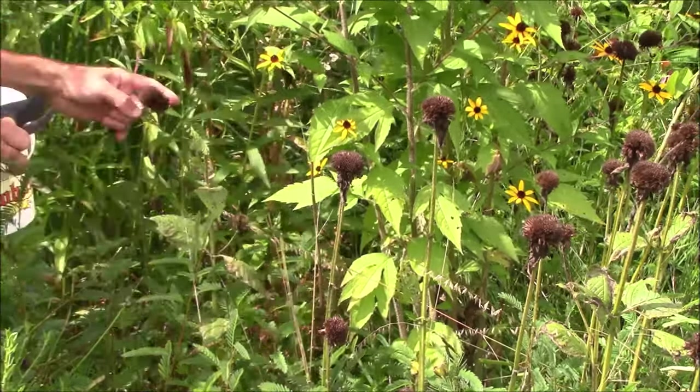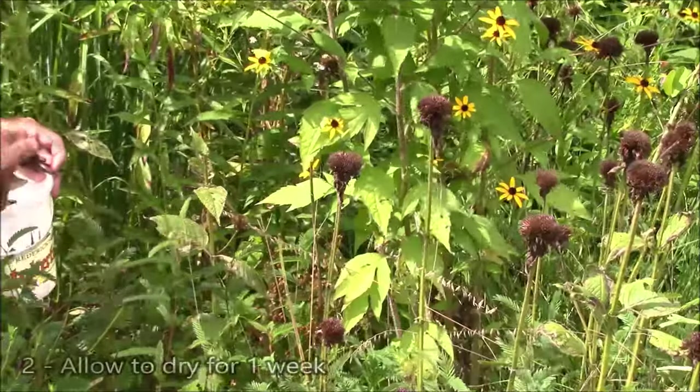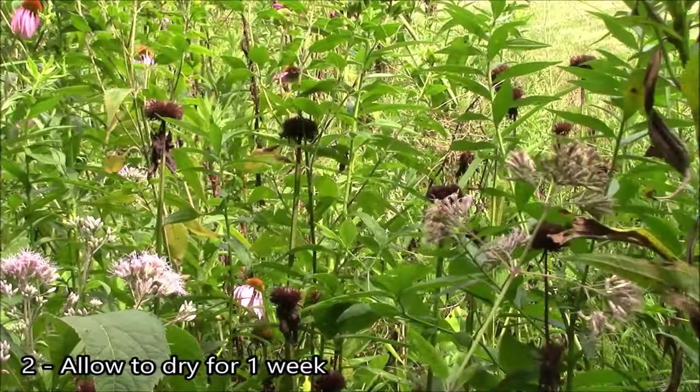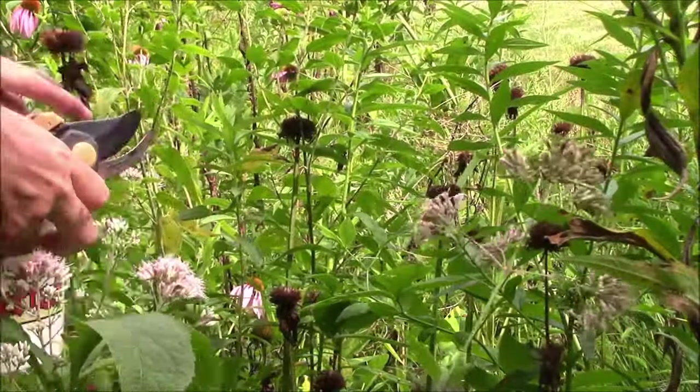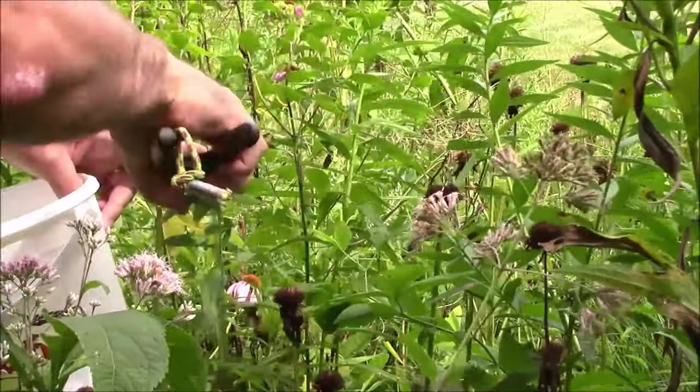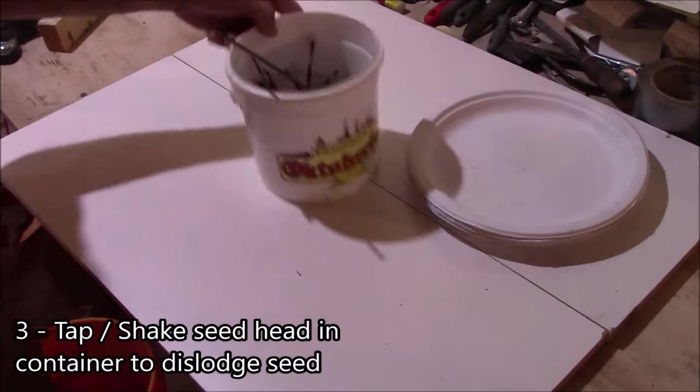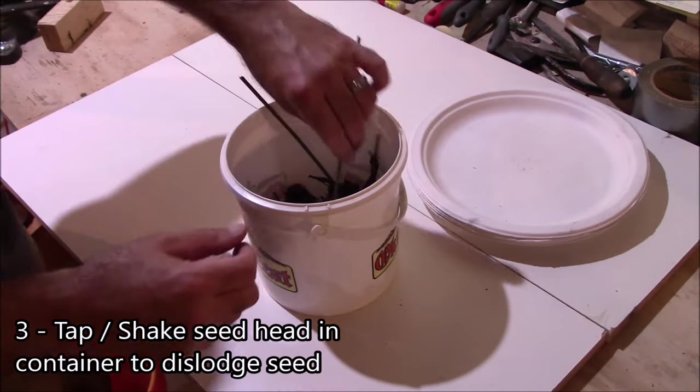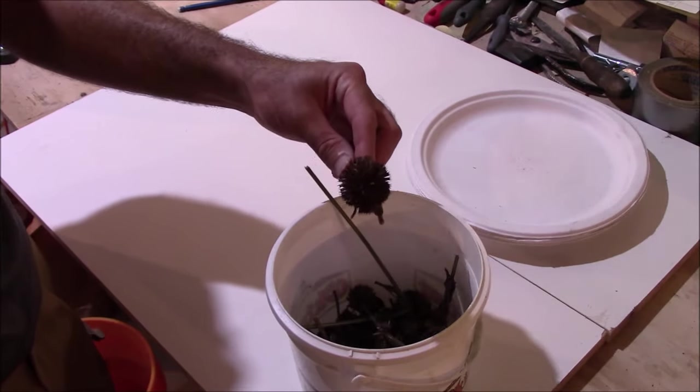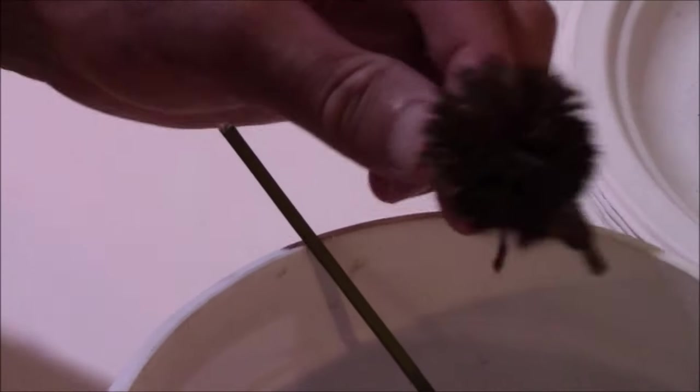Carefully gather seed heads, making sure that you never tip a seed head on its side or upside down unless it's safely over a bucket or a paper bag. After you do that, you're going to allow your seed heads to dry for about another week in a cool, dry spot.